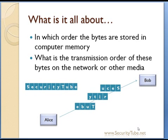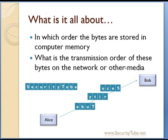As an example, let's say Alice wants to transmit some words to Bob — she wants to transmit 'securitytube' to Bob. She can choose to send S-E-C-U-R-I-T-Y from the beginning, or she can choose to send it from the tail end: E-B-U-T and so on. In this example, Alice has chosen S-E-C-U-R-I-T-Y, the bigger end first. She can also choose to transmit the other way — that is, the little end way. So these are basically the two endiannesses: big endian and little endian.